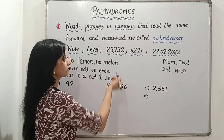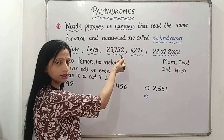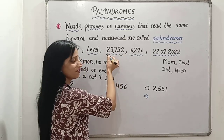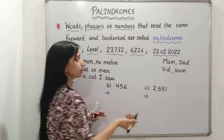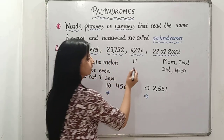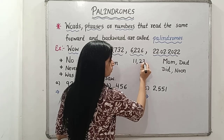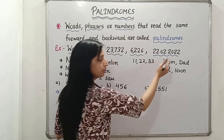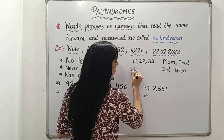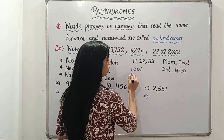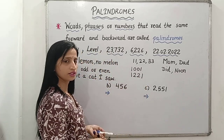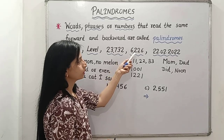Now moving on to numbers. For example, the number 23,732 — let's read it from the back side: 2, 3, 7, 3, 2 — again 23,732. There are many more numbers. For example, take 11 — 11 is a palindromic number. Then 22, then 33, and so on: 44, 88, 99, 1001, 1221. These are all palindromic numbers. One more example: 6226.